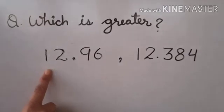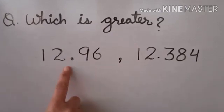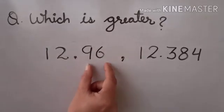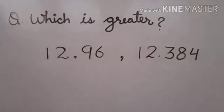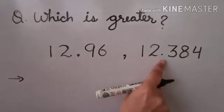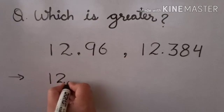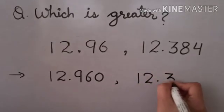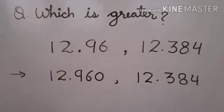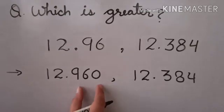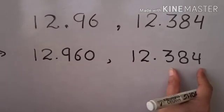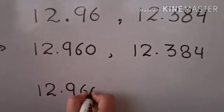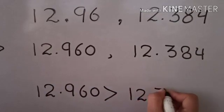Let us solve one more example. Here we have 12.96 and 12.384. Here integral part of both the numbers is same, that is 12. Here the decimal part is 96 and here 384. Now, we convert both the numbers into like decimals by adding 0. So, 12.960 and 12.384 are the like decimals. Now, compare the decimal part of both the numbers. It is 960 and it is 384. Now, it is clear to us 12.960 is greater than 12.384.